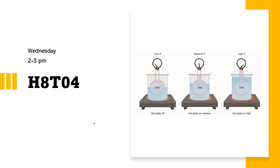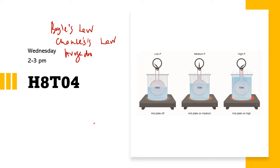Assalamualaikum warahmatullahi wabarakatuh. Good evening class. For our one-hour slot we will discuss the gas laws, a continuation from last week. Last week we discussed Boyle's Law, Charles's Law, and Avogadro's Law. When we combine these three laws, we get the ideal gas equation: PV = nRT.